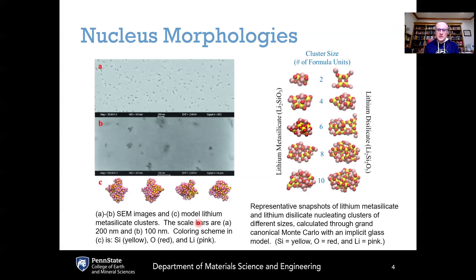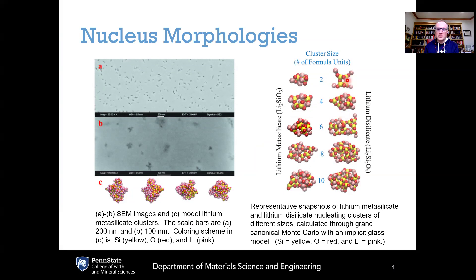This shows an example of some calculated nucleating clusters. On the left, this is lithium metasilicate; on the right, lithium disilicate. Going across the rows, it's a different number of formula units in the clusters. The first row shows two formula units in the cluster, and then four, six, eight, and so on. And you can see that these shapes are—some of them are kind of spherical, but others are quite different from a spherical shape.